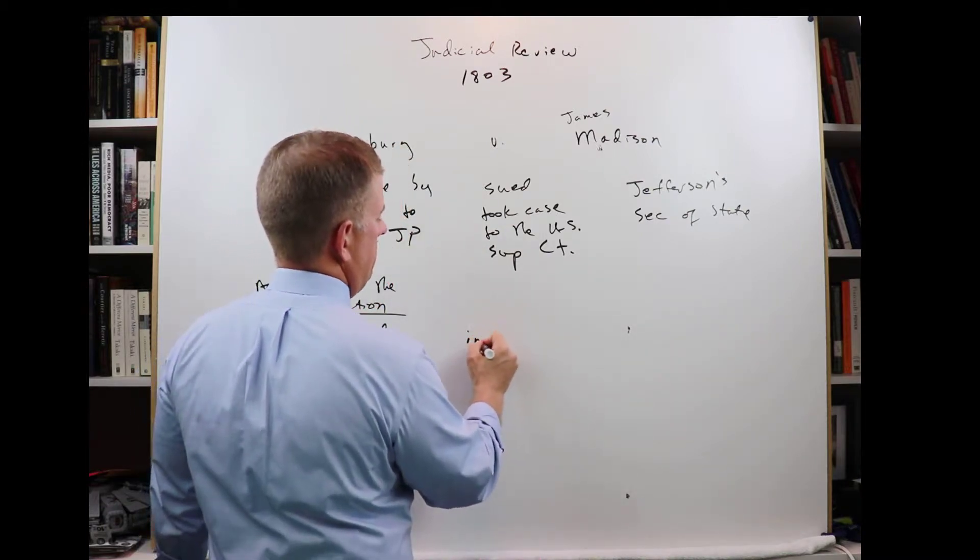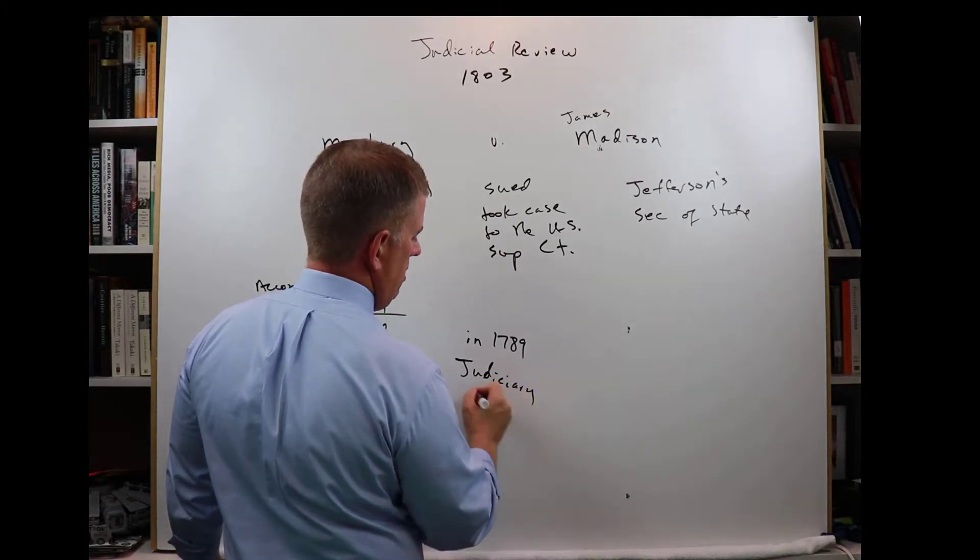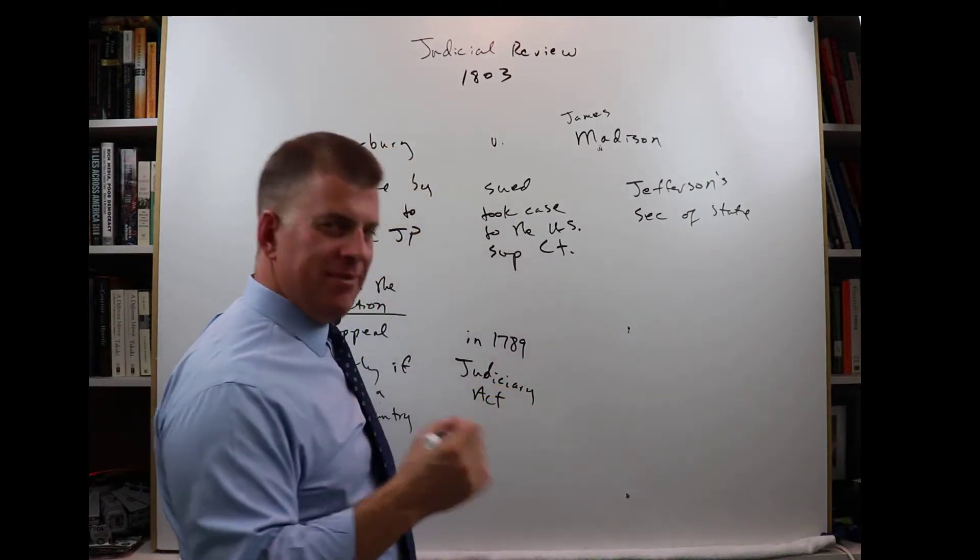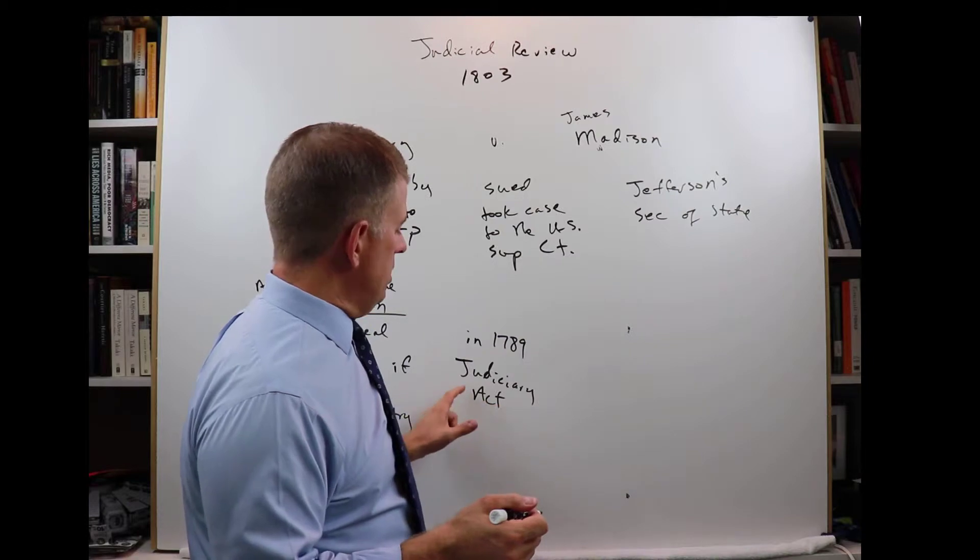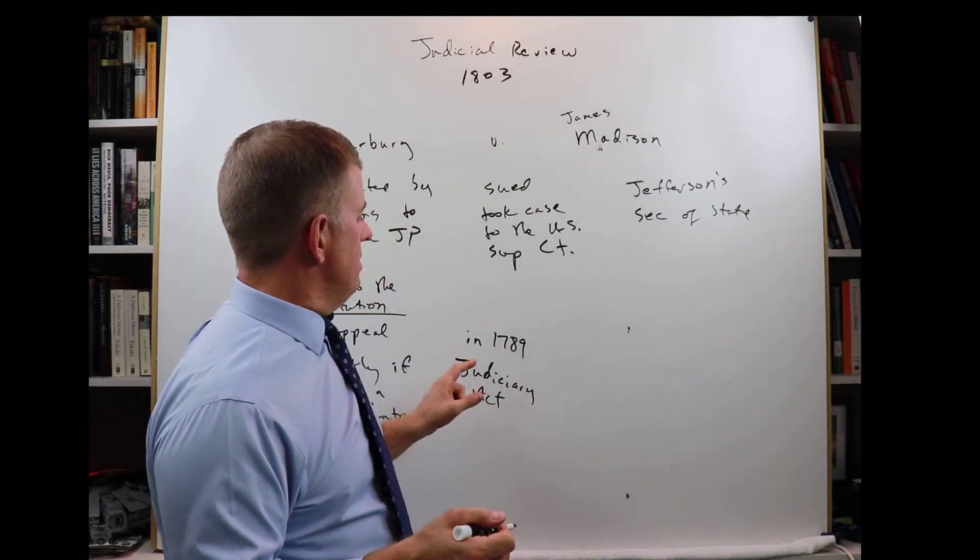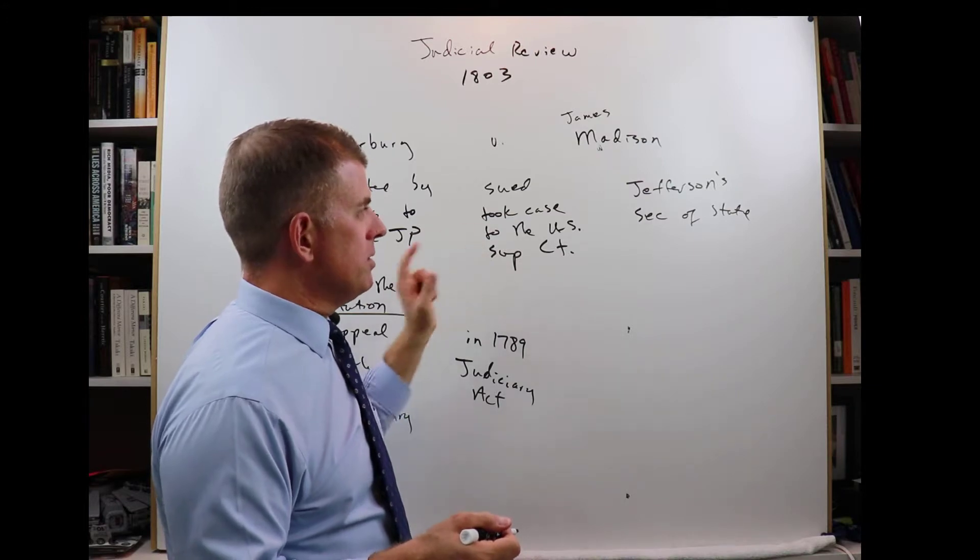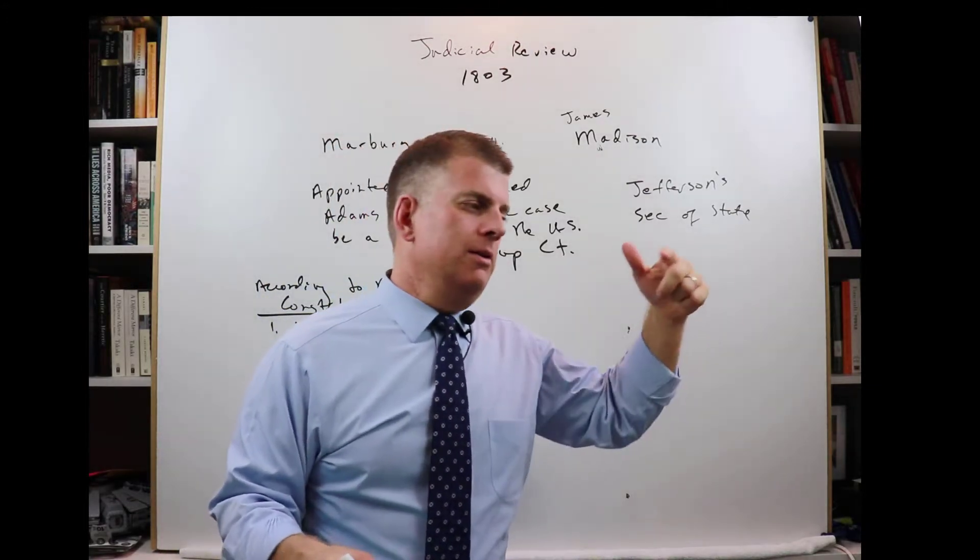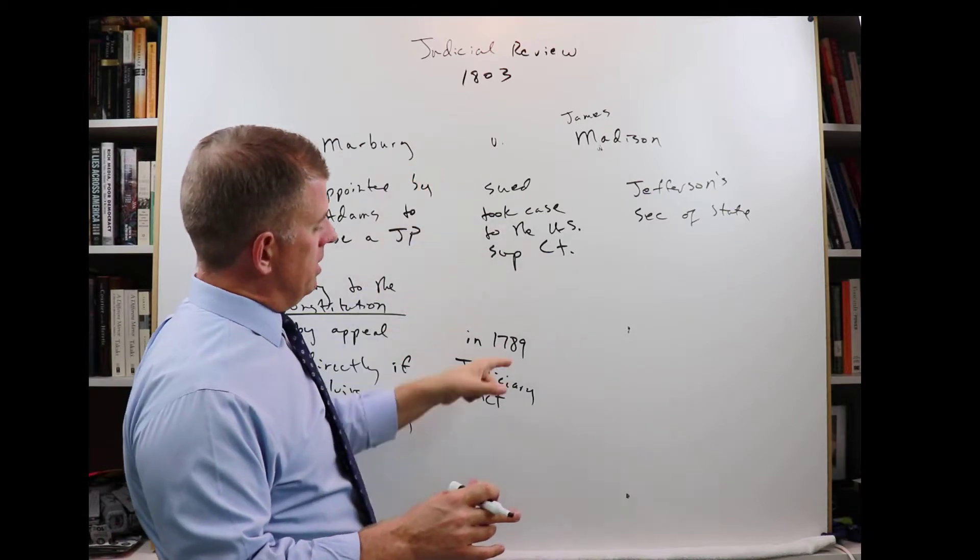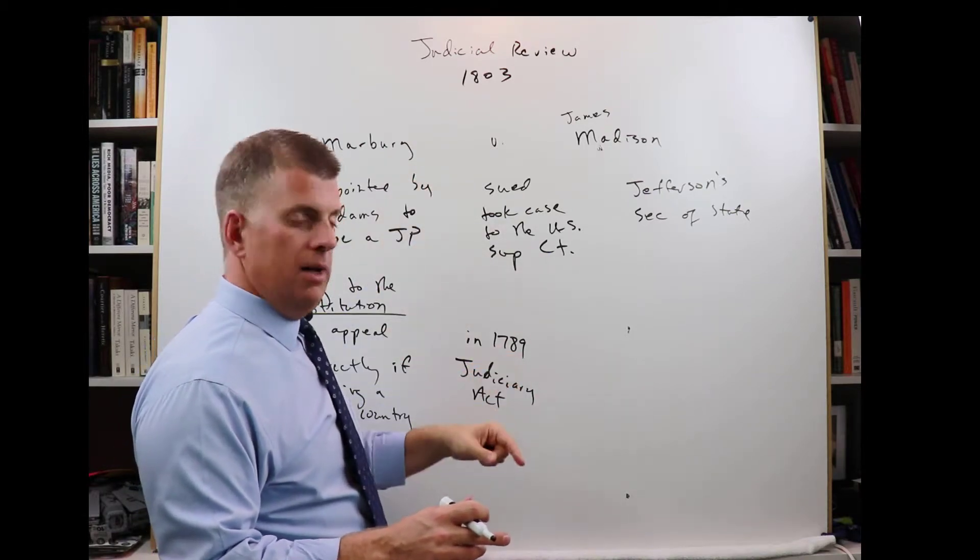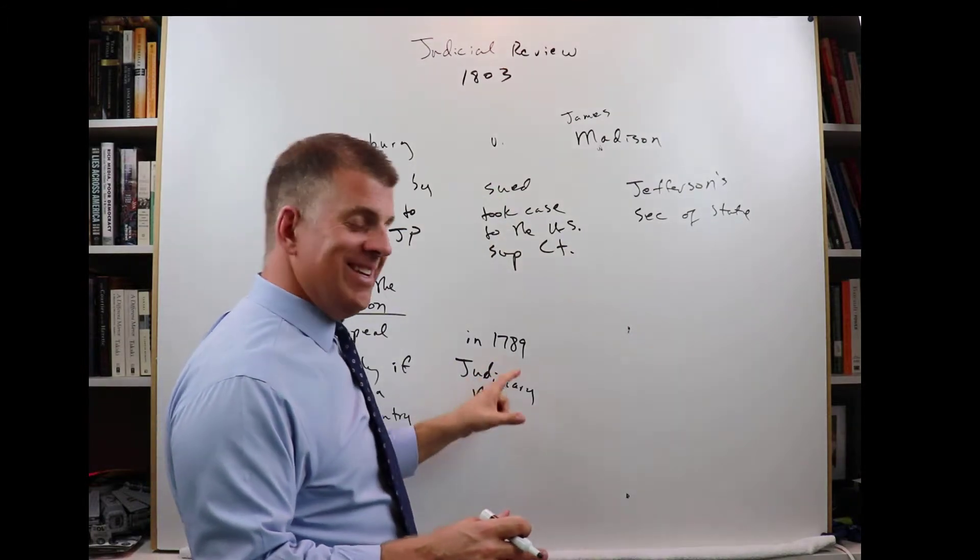Well, in 1789, Congress passed a law, the Judiciary Act. Now, all of these specifics of the Judiciary Act are not important for us right now. What is important to know is that there was part of this law that Marbury said allowed him to take his case to the Supreme Court, directly to the Supreme Court. It's about a writ of mandamus, and if you're going to force somebody to do something, it gets complicated. Don't worry about that. Just know that Marbury thought that because of this Judiciary Act in 1789, that it allowed him to take his case to the Supreme Court. And on its face, it did.